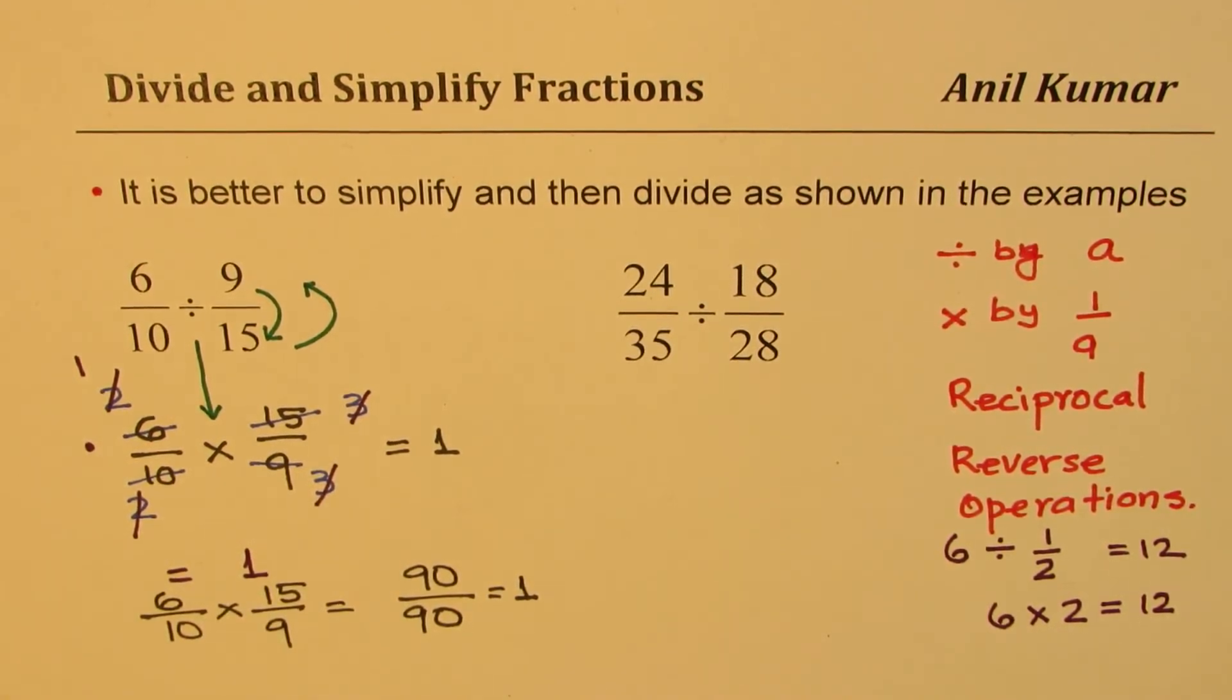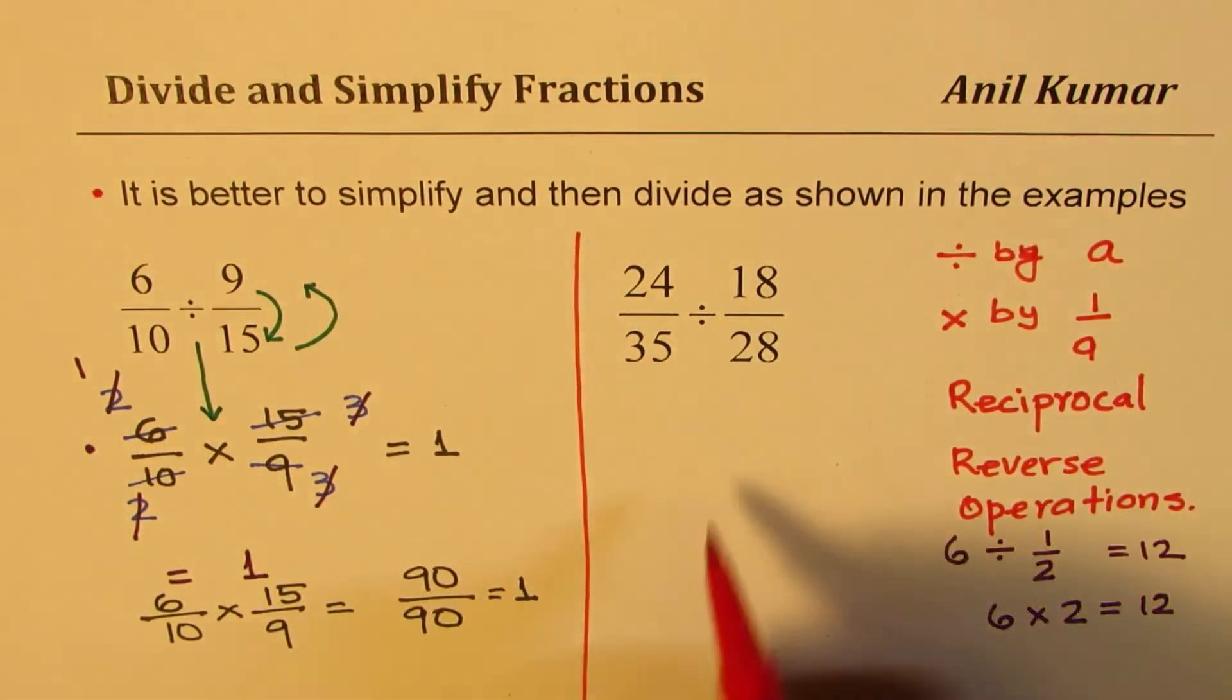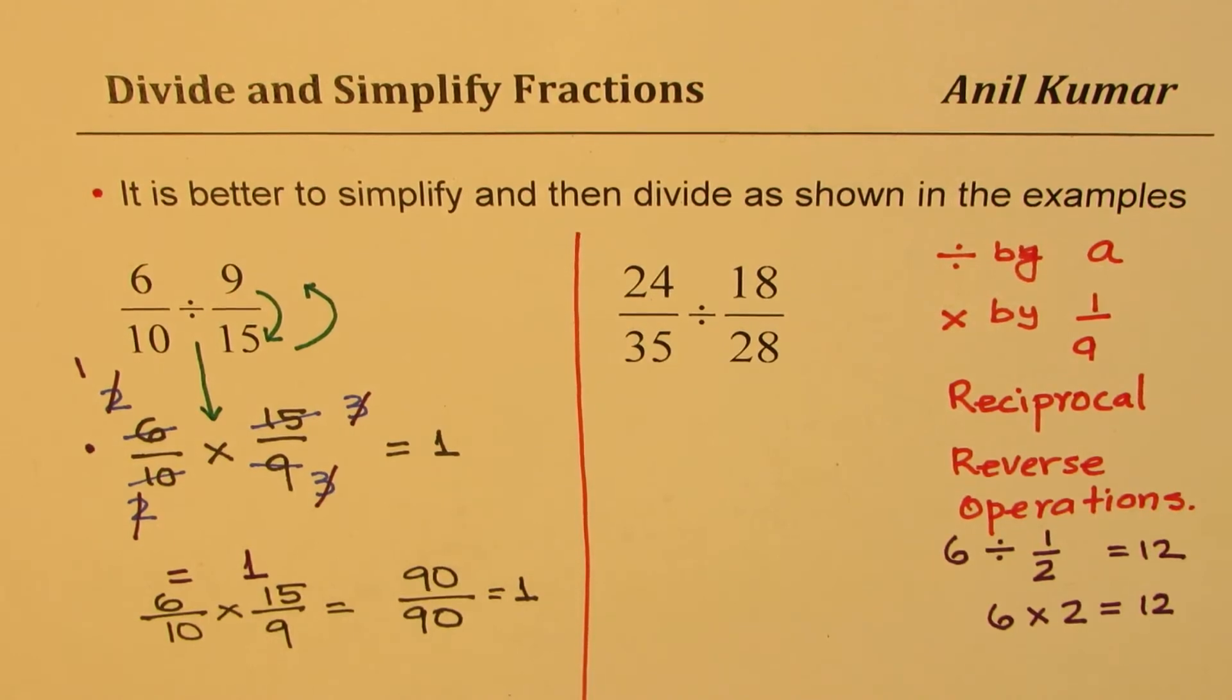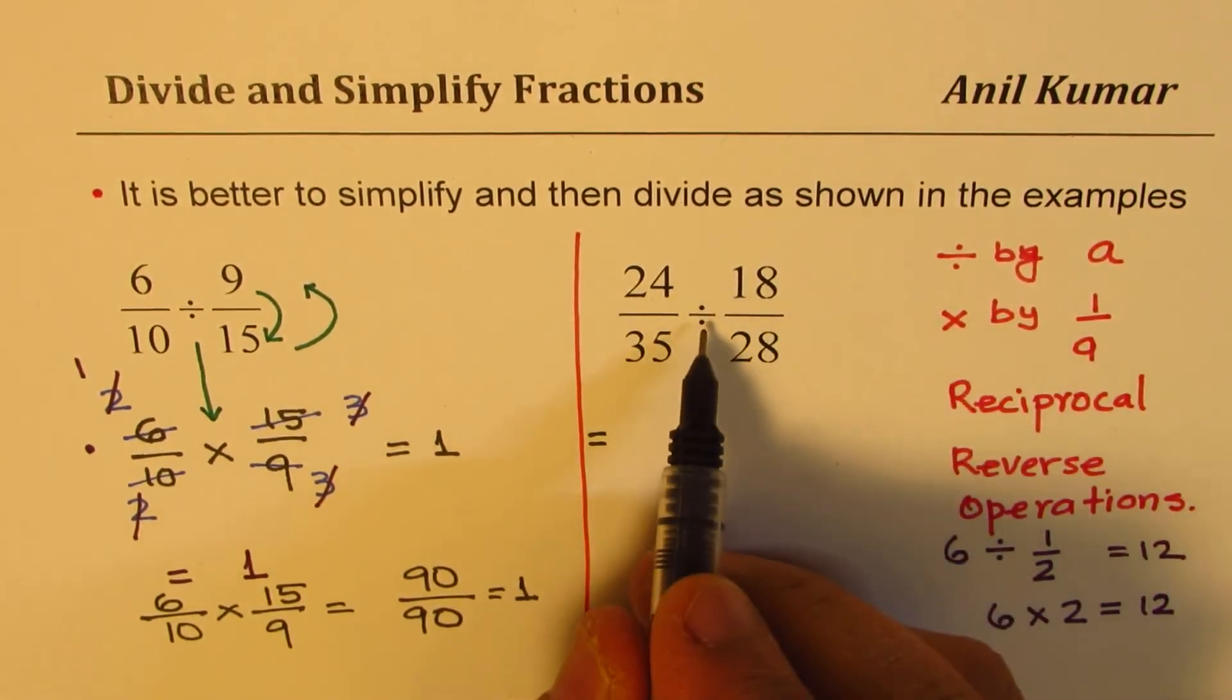Now the second question here is for you to practice, so you can copy this, practice, and then check with my solution. So what is the first step? The first step is to write the same function with flipped—rather division as multiplication.